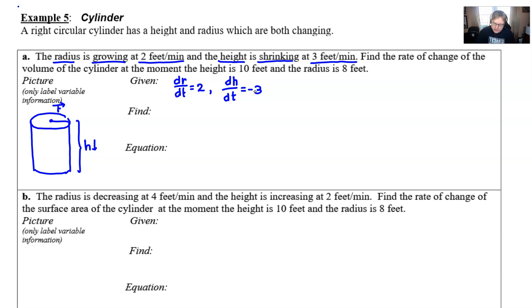You're asked to find the rate of change of the volume of the cylinder at the moment the height is 10 feet and the radius is 8 feet. So that's where your find comes into play: dV/dt when h=10 and r=8. You're getting a lot of really good information down on paper.